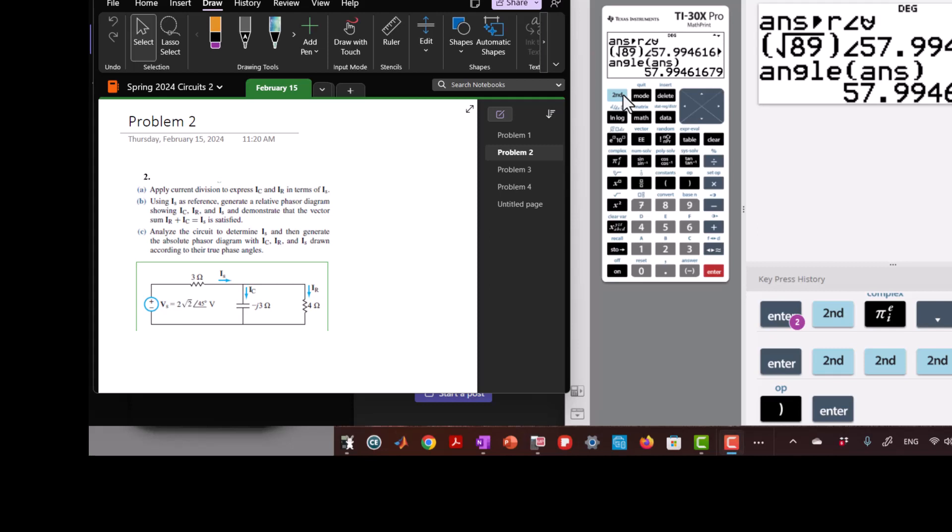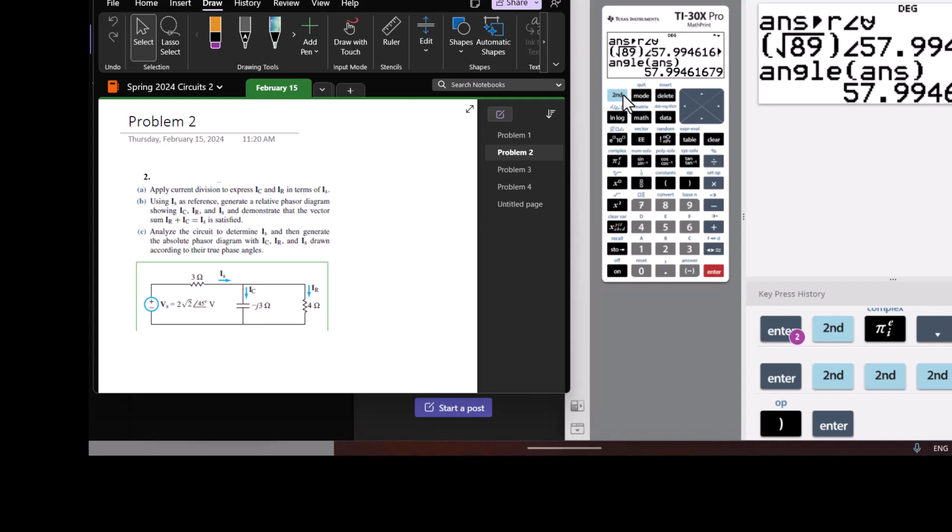So this next problem, we use current division and we're going to draw some phasor diagrams, which I have not done yet this year. A lot of what Chapter 7 is about is showing how you can use everything you learned about DC circuits with phasers as well. It's just now the numbers are not so pleasant, but everything that you did before still works.